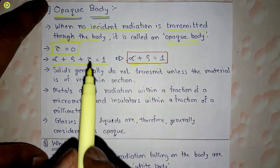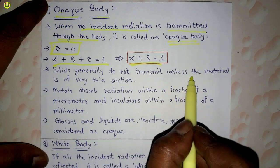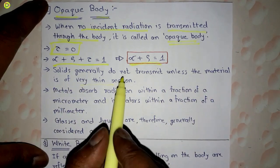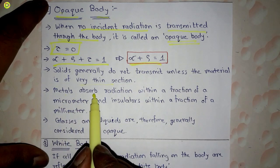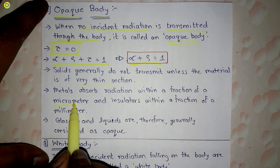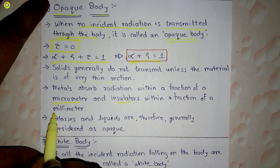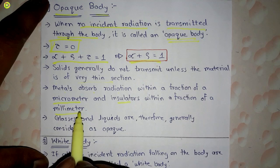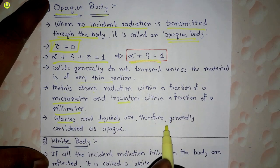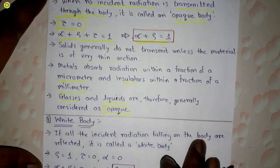Solids generally do not transmit unless the material is of very thin section. Metals absorb radiation within a fraction of a micrometer, and insulators within a fraction of a millimeter. Glasses and liquids are therefore generally considered as opaque.